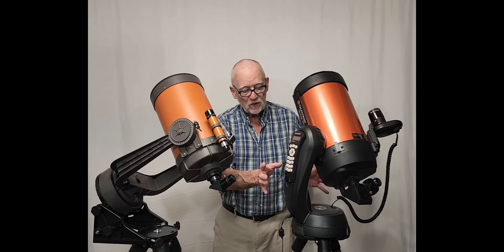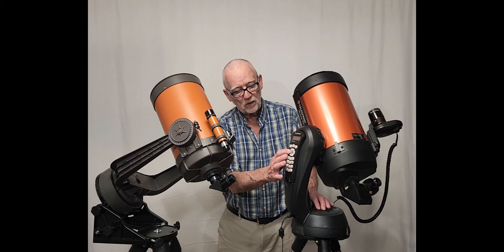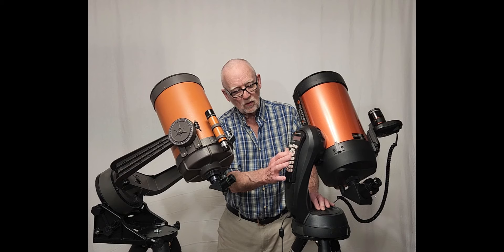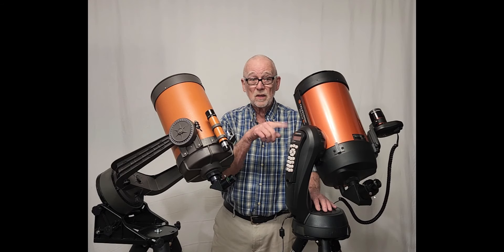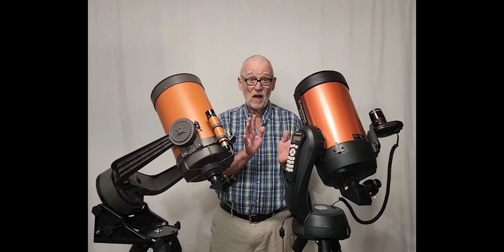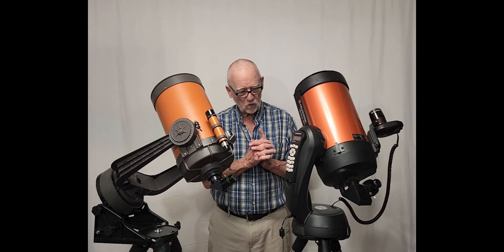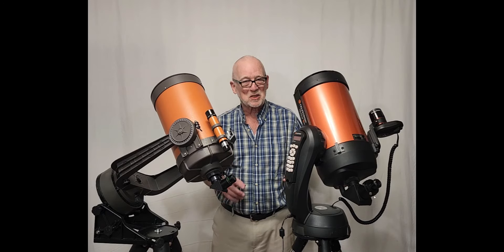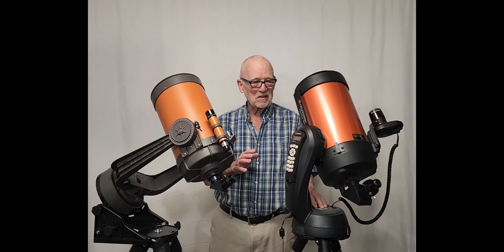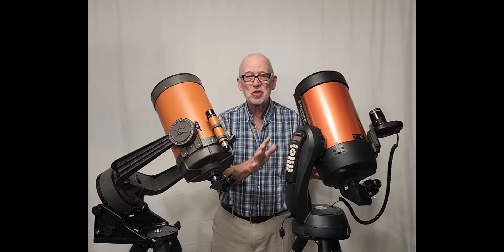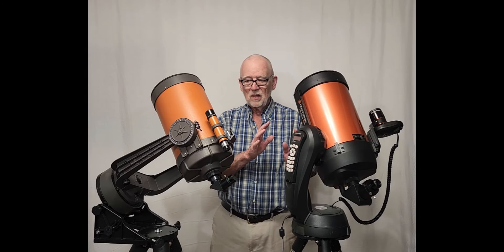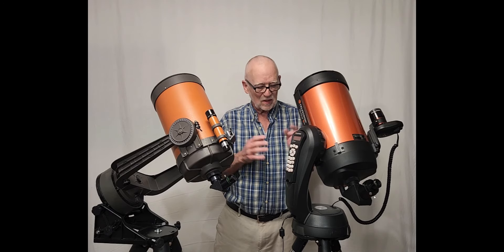This is of course all electronic go-to. You cannot move this scope manually. The only way you can move it is with the hand paddle. So you use the hand paddle to move it around. This will go any place in the sky. Once you get it aligned it will find things in the sky. That's very nice. It'll go wherever you want. This one you're stuck with a 6x30 finder and your setting circles and good luck buddy because you're gonna have some challenges. This one has its challenges also of course. So this has its advantages but other than that they're almost identical telescopes.